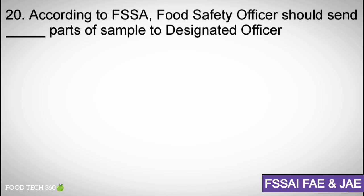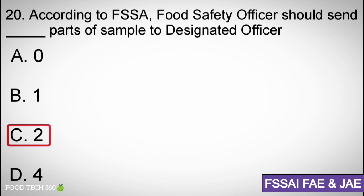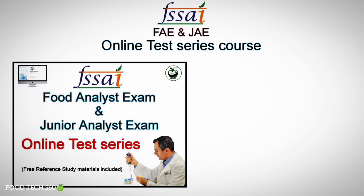Question number twenty: According to FSSA, the Food Safety Officer should send how many parts of a sample to the Designated Officer? Options: A) 0, B) 1, C) 2, D) 4. Correct answer: C) 2 samples.